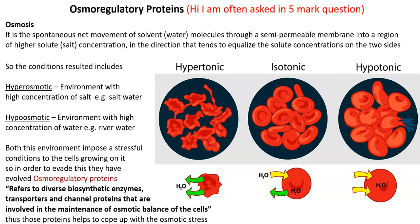First we look at the definition for osmosis. It is a spontaneous net movement of solvent — that is water molecules — through a semi-permeable membrane into a region of high solute concentration, that is salt or sugar present in high amounts. The process takes place in the direction that tends to equalize the solute concentration on both sides of the membrane. The resulting condition includes a hyperosmotic environment with a high concentration of salt, simply ocean water, salt water, or sea water.